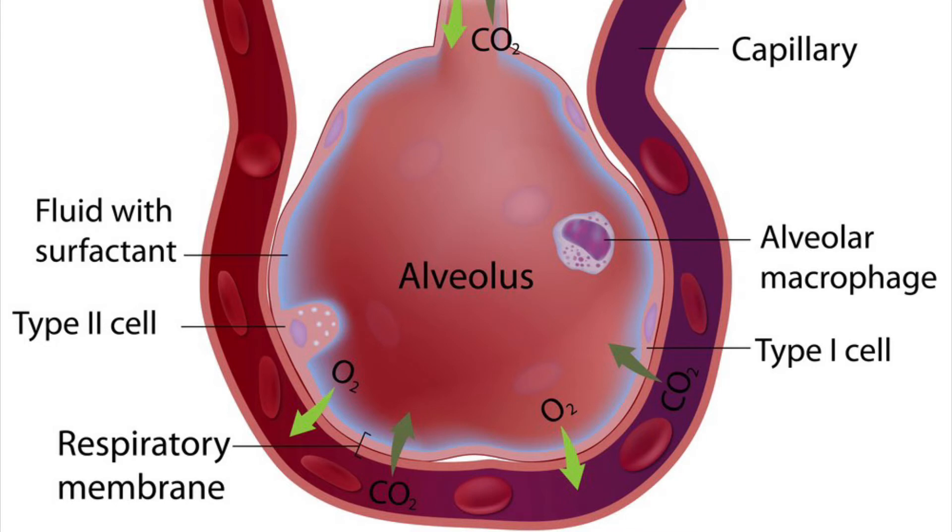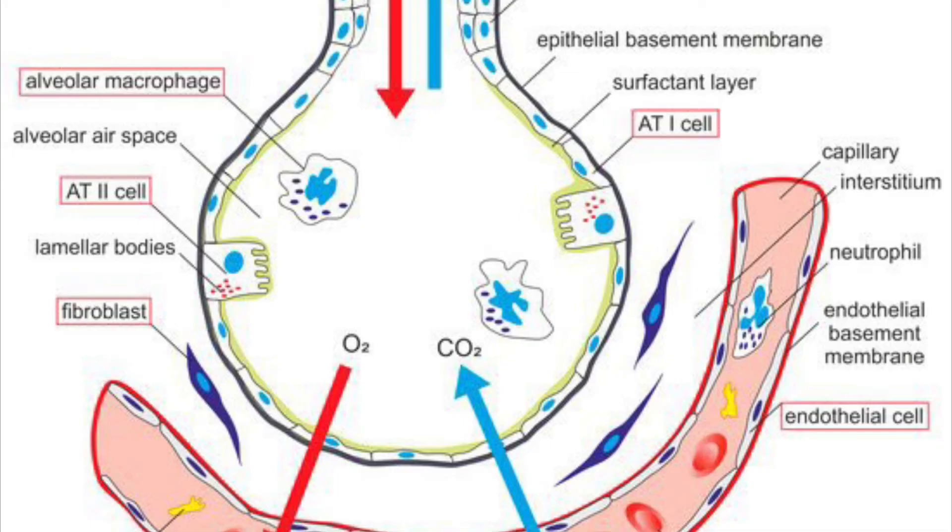The alveoli are the terminal unit of the respiratory system responsible for gas exchange. The alveoli are comprised of three different kinds of cells. One is type 1 pneumocytes which aid in respiration. They do not replicate. Another is type 2 pneumocytes. They secrete a lipoprotein called surfactant that prevents the collapse of the alveoli even after exhalation.